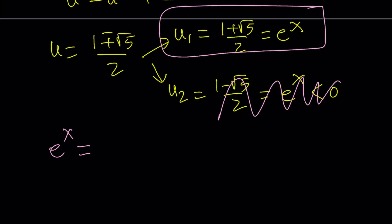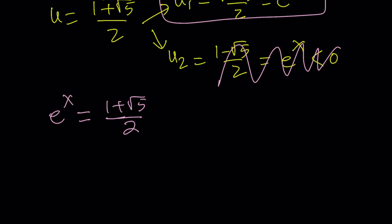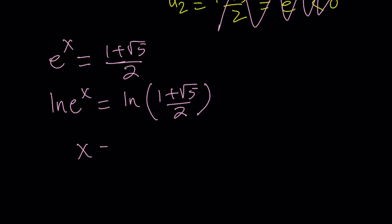So the first one gives me e^x = (1 + √5)/2. Now, this is the golden ratio. That's why we call this a golden equation. Old but gold. To find the x value, we're going to ln both sides. This is the inverse operation for e to the power something. ln(e^x) = ln((1 + √5)/2). And as you know, ln(e^x) is the same as x. So from here, we get x = ln((1 + √5)/2).